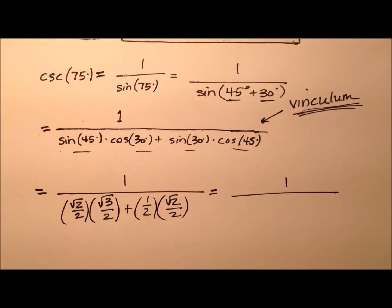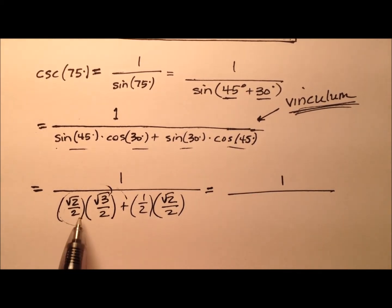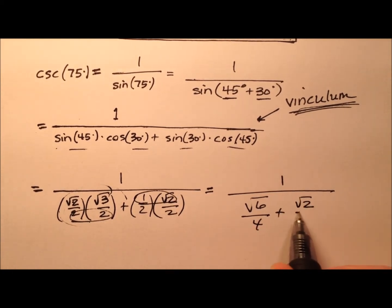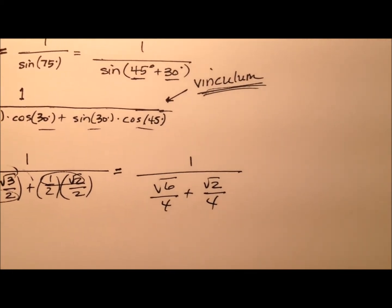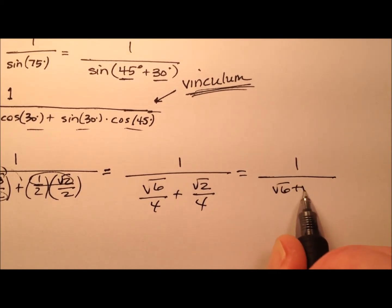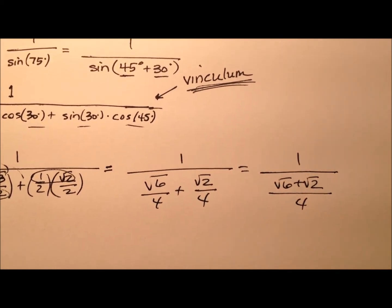So 1 over, let's do these products here. We have the square root of 6 over 4, and we're adding to that the square root of 2 over 4. Let's put that together. We have the square root of 6 plus the square root of 2 all over 4.